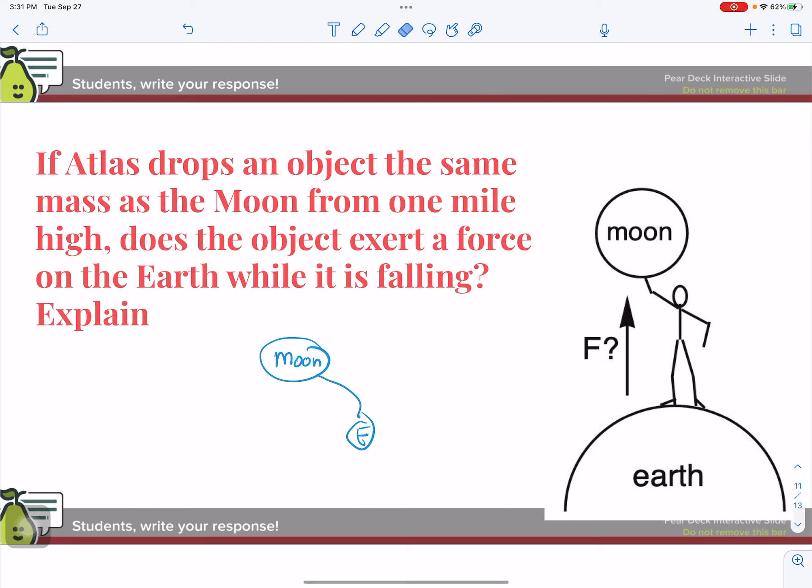Actually, we're going to call this the force of gravity because I don't really think about the weight of the moon. We call this the force due to gravity. And it is an interaction. The earth is attracting the moon. That's why the moon is falling. But the moon is attracting the earth.